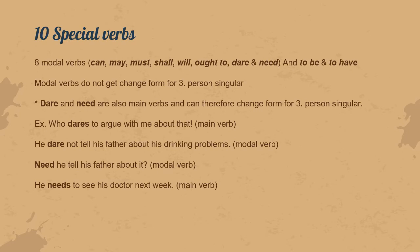The rule about the verb changing form in the third-person singular applies to almost every verb in English, but there are ten special verbs that don't change their form, or change their form in a different way, for the third-person singular. Eight of them are modal verbs: can, may, must, shall, will, ought to, dare, and need.